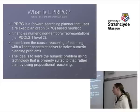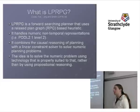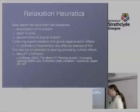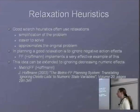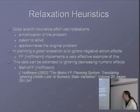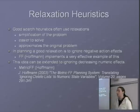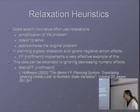The idea is basically that linear programming has been around for a long time and is very good at solving numeric problems — so why not make use of it in planning and combine the two together? We're essentially using a relaxation heuristic. Good relaxation heuristics simplify the problem in some way to make it easier to solve. It's an approximation to the original problem which we can solve much more easily, get an answer, and then use that to guide us towards the goal.